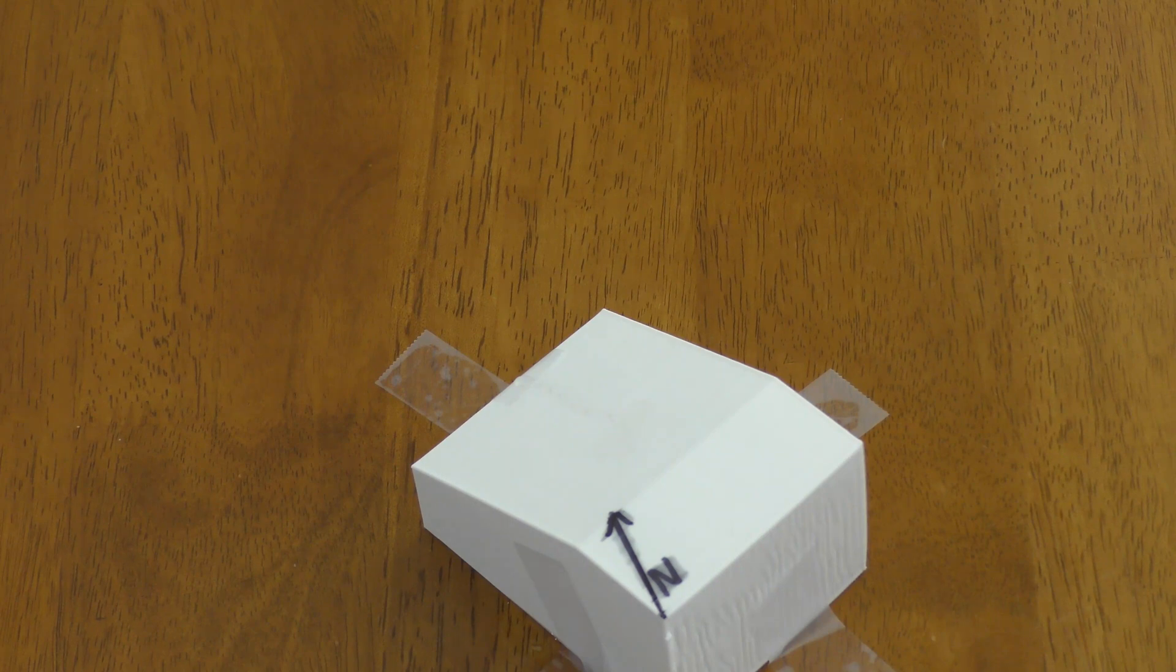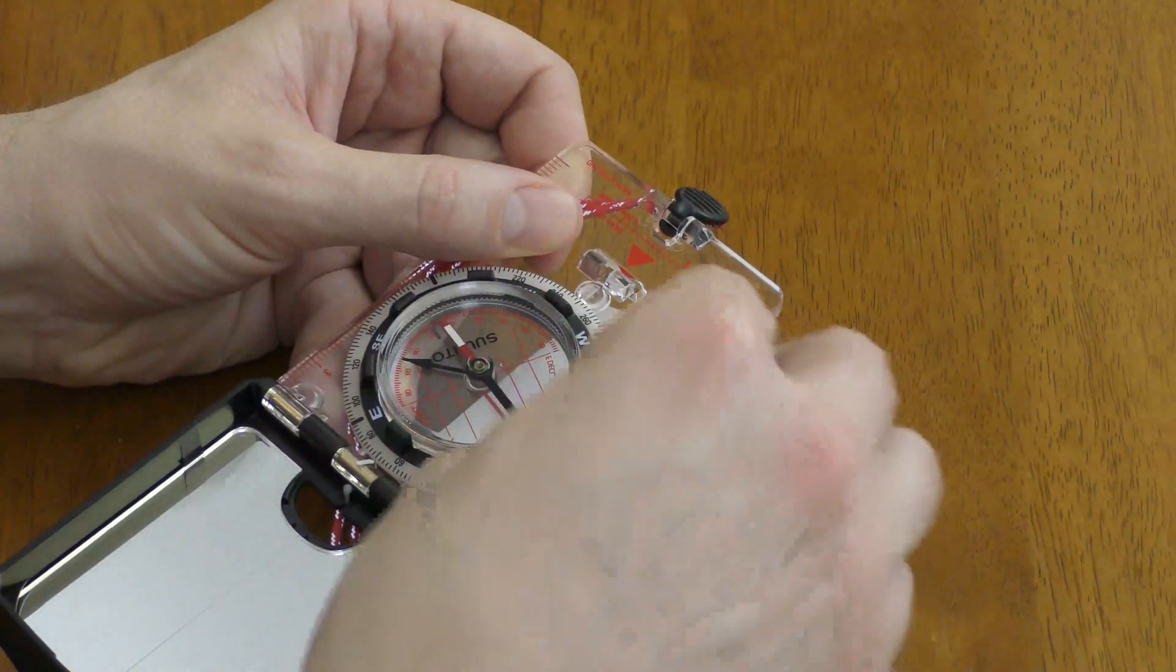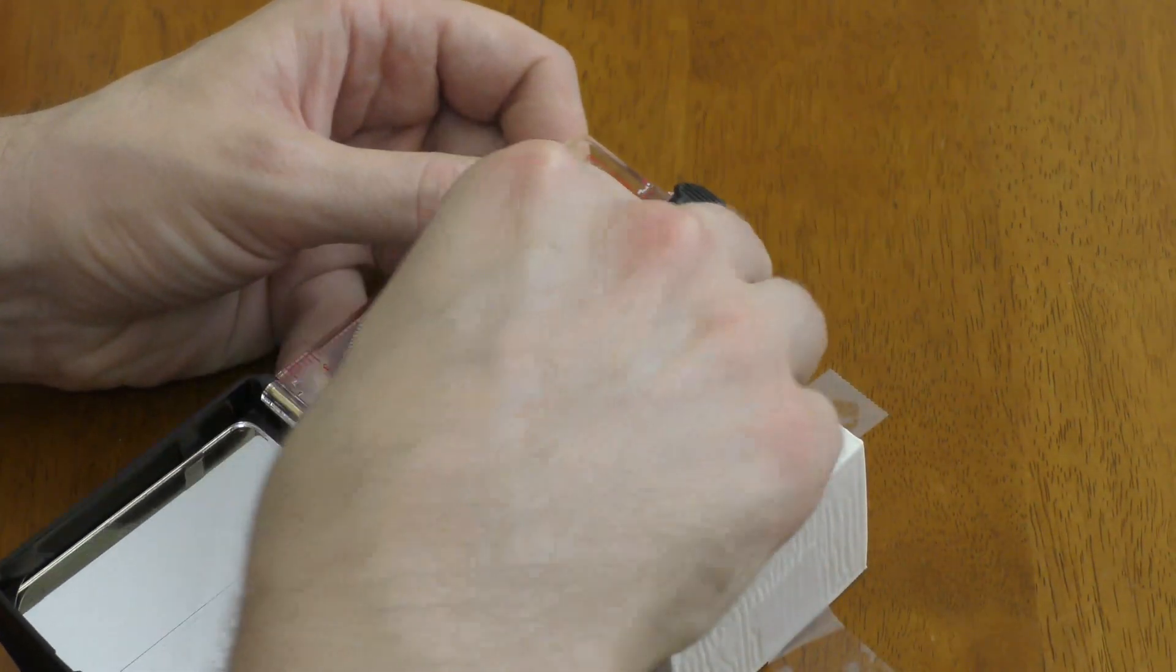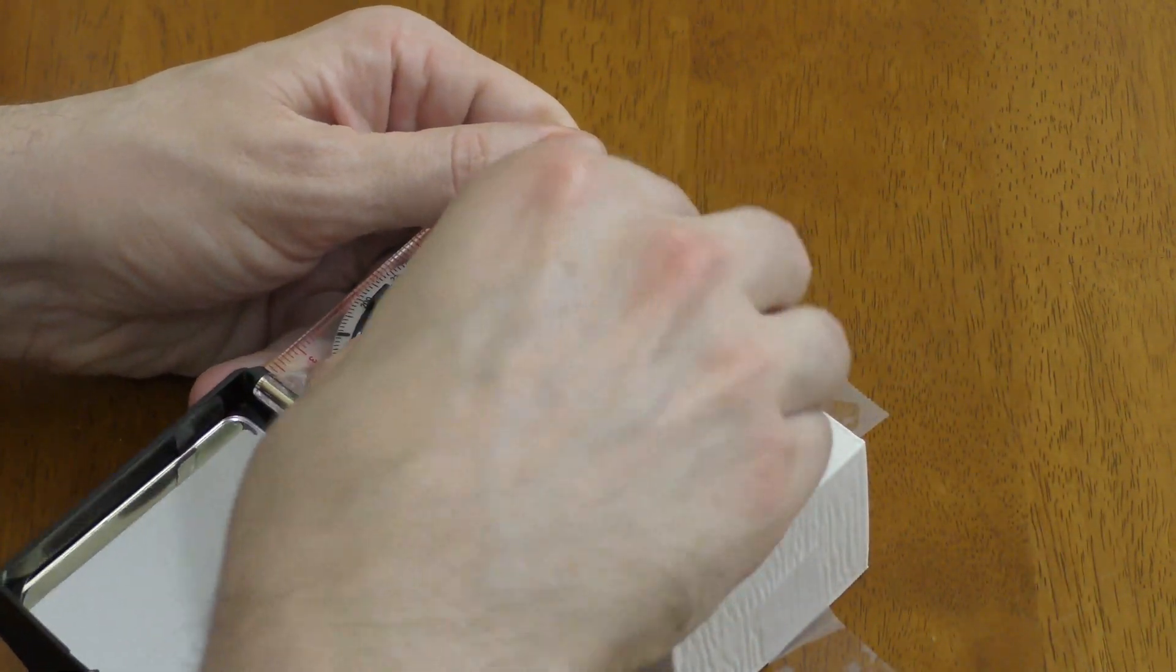So what we want to do is go perpendicular to that to measure the strike. Turn the compass around this way, and then I rotate again through here.